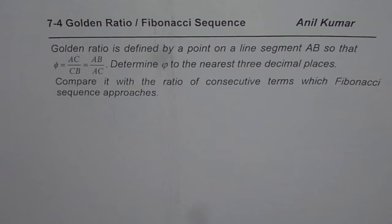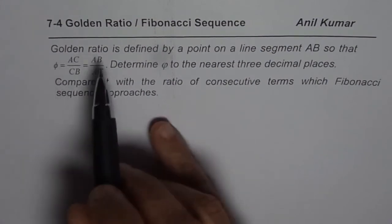In the previous video we found that the ratio of consecutive terms in Fibonacci sequence is 1.618. Remember that part.